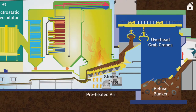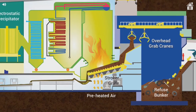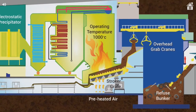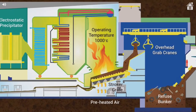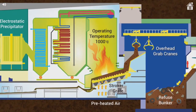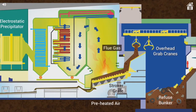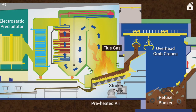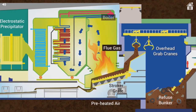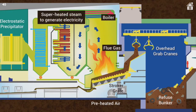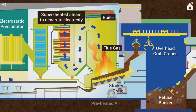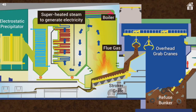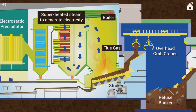The normal operating temperature in the furnace is about 1000 degrees Celsius. The flue gas produced in the combustion process flows through the boiler to generate superheated steam which is used to generate electricity.